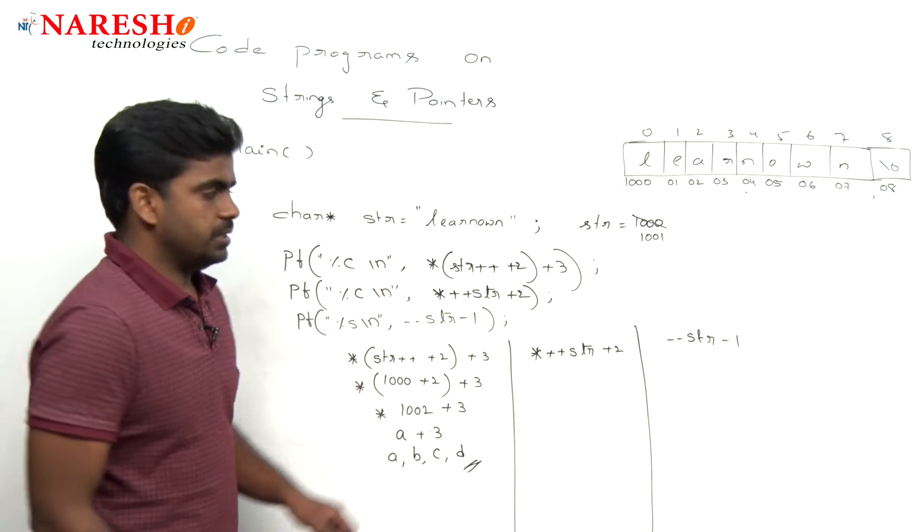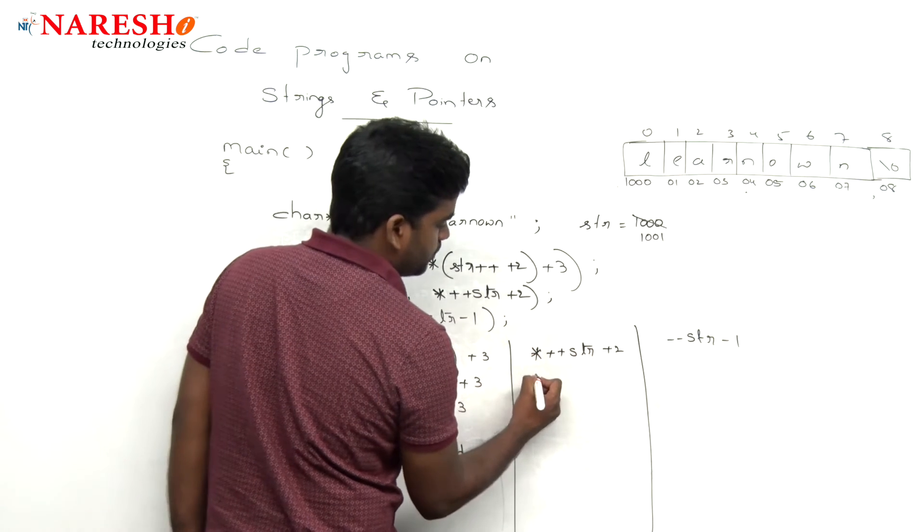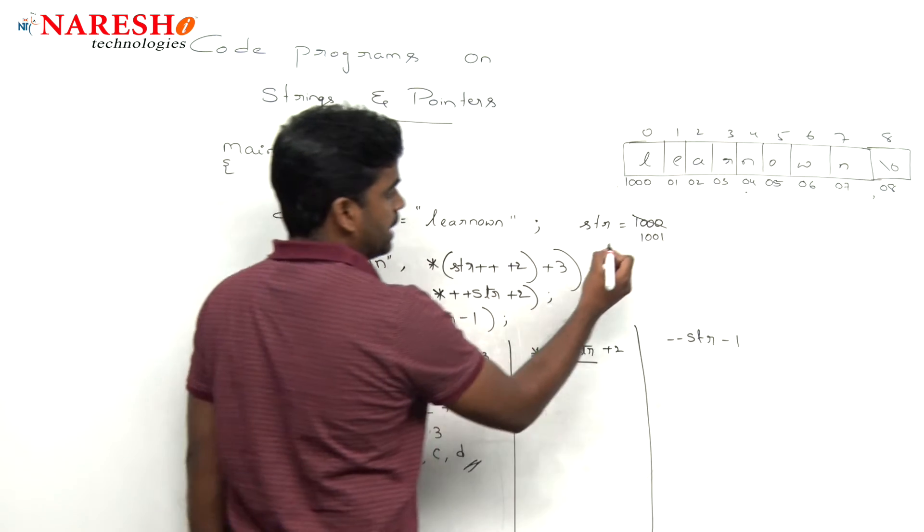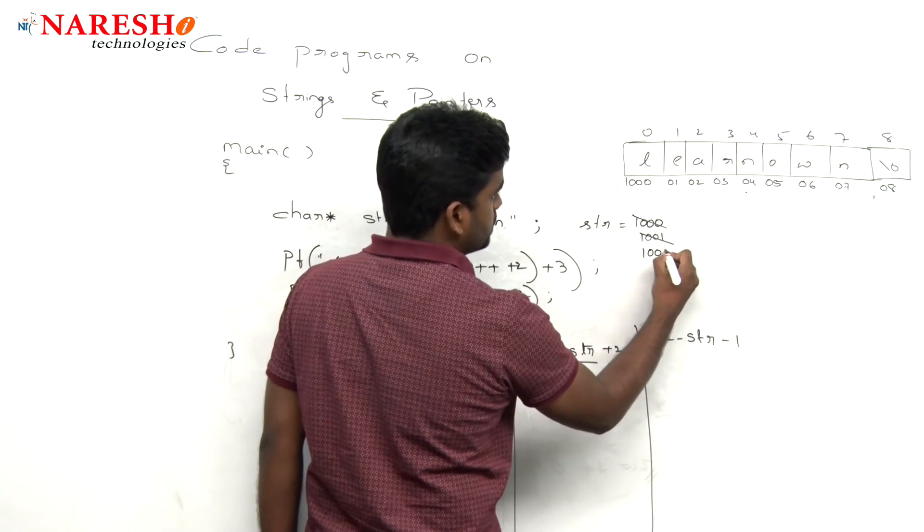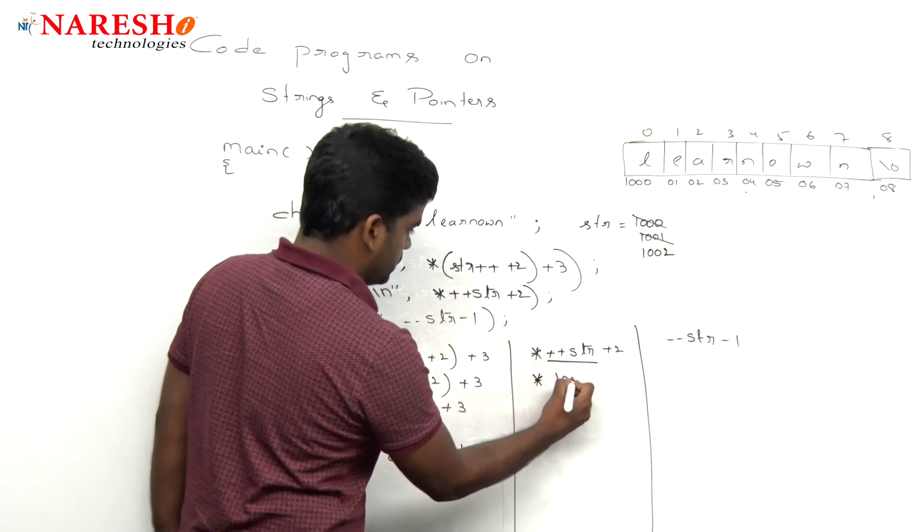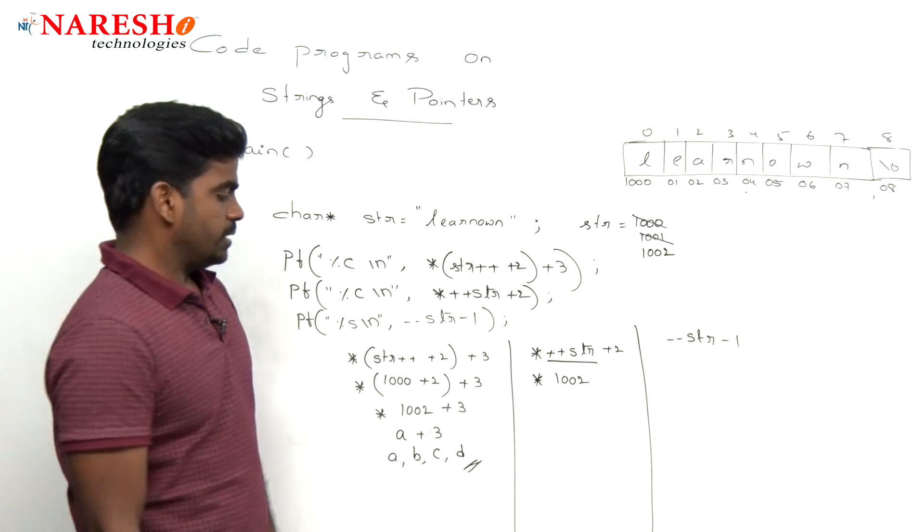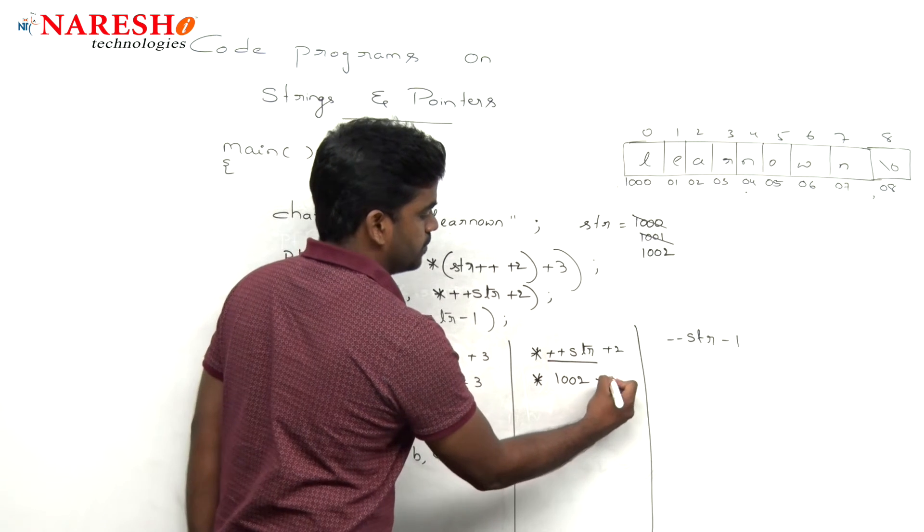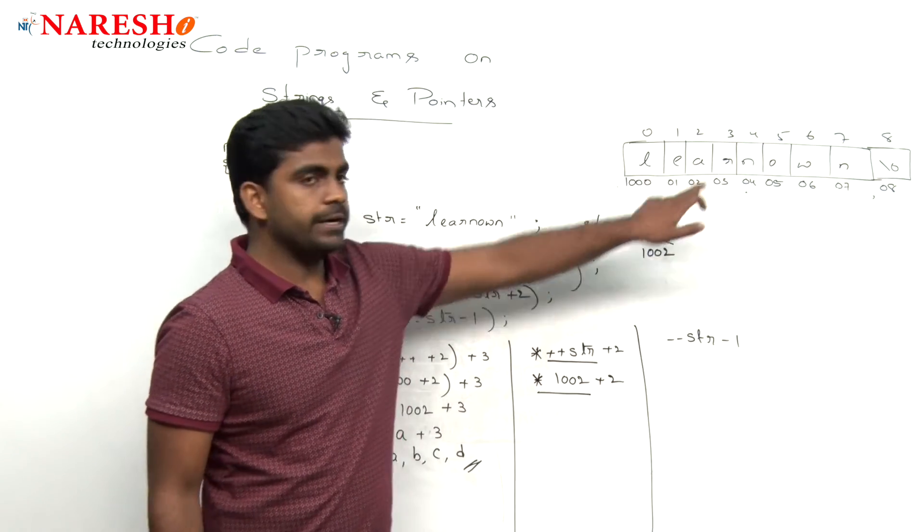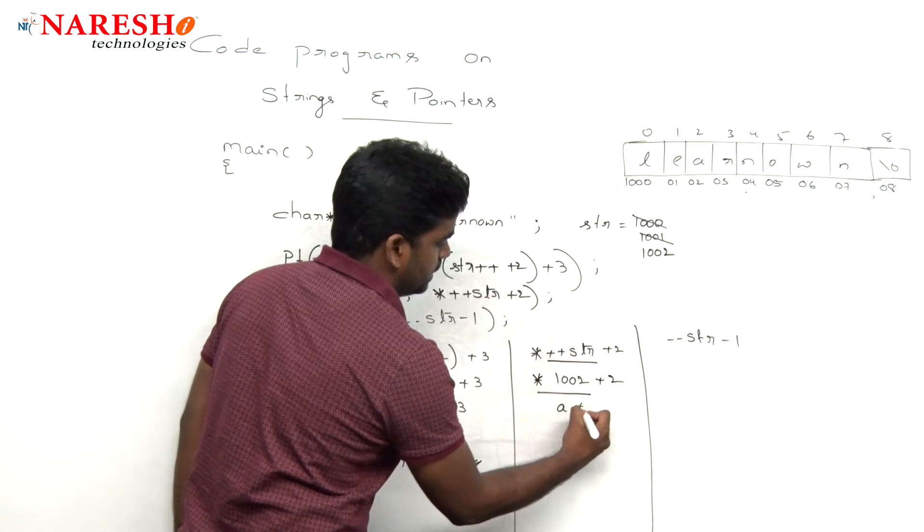And the next one: here it is a pointer ++str, str executes. It is like the value becomes 1002. Here it is the same thousand and 2 plus 2. So pointer to thousand and 2 executes first.